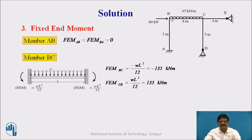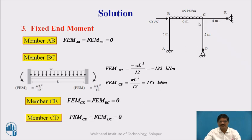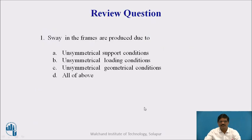The left side is minus since it is anticlockwise. So FEM_BC is minus 135 and FEM_CB is plus 135. For member CE, we don't have any load here, therefore the fixed end moment is 0. And member CD also has no load, therefore the fixed end moment is 0. Let's take a pause and answer this question.